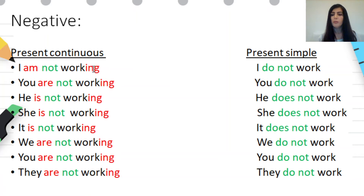Present simple negative form: we use 'not,' but this time after the verb 'do.' I do not work. You do not work. He does not work. She does not work. It does not work. We do not work. You do not work. They do not work.